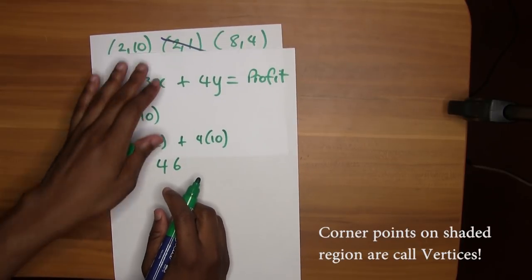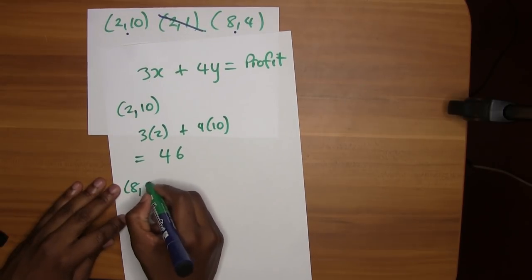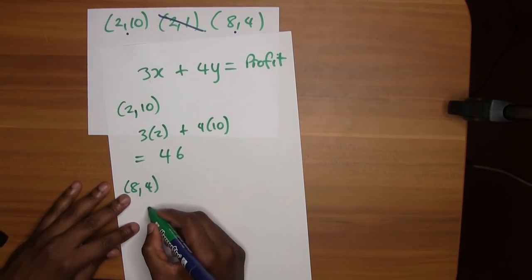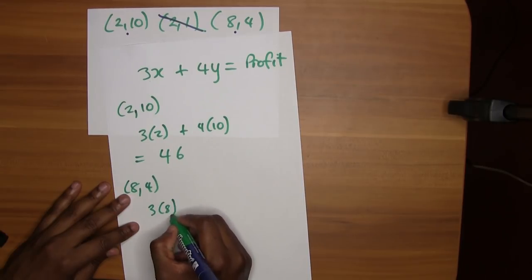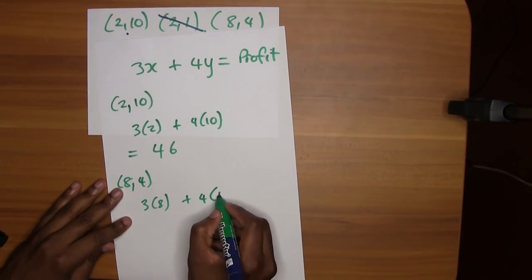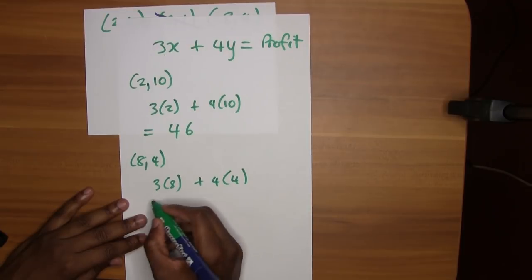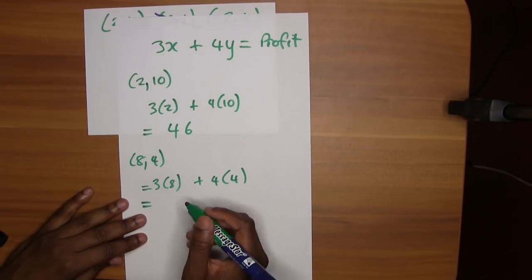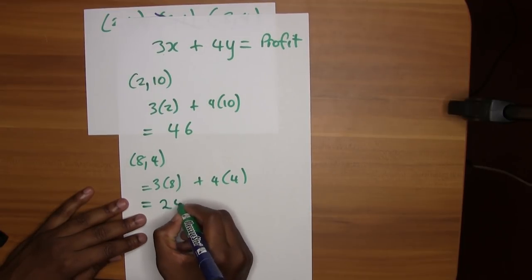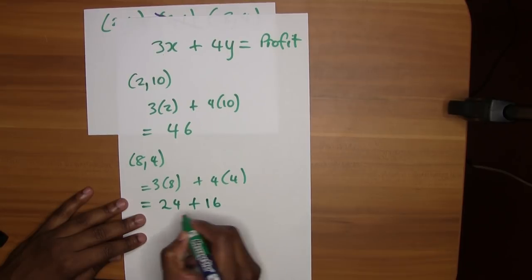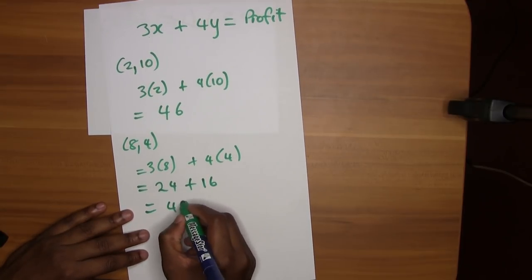And for the 8, 4 vertex, three by eight plus four by four. So three by eight, that's 24, plus four by four is 16, so this is going to give us 40.